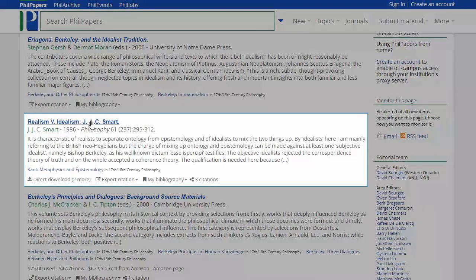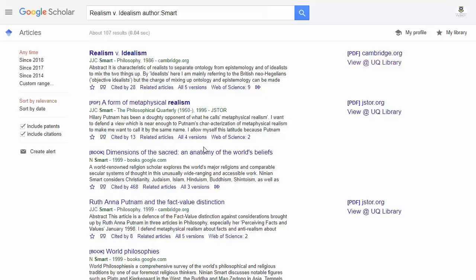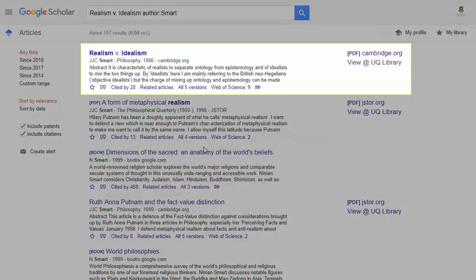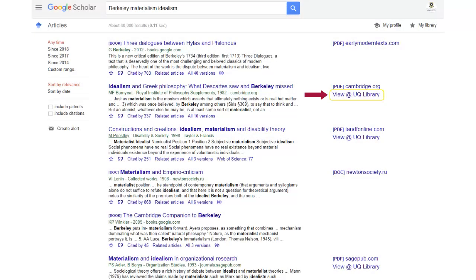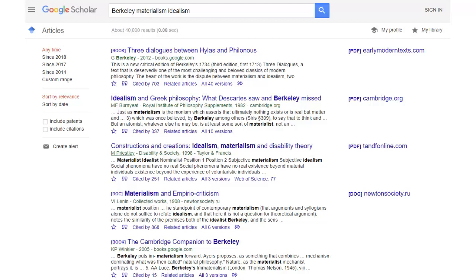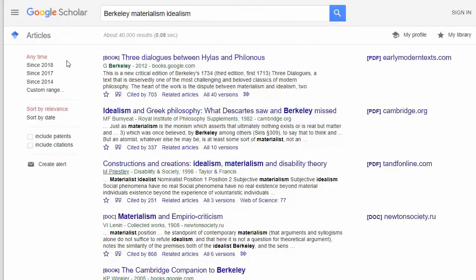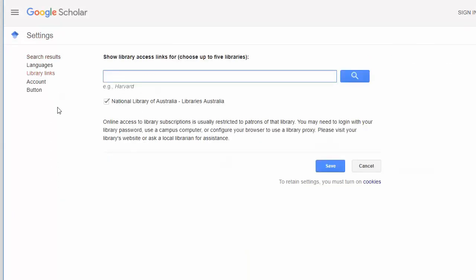Phil Papers doesn't link to the Library's subscribed resources. When you find an article you like, click on Find It On Scholar to go to the citation on Google Scholar. Make sure you have Google Scholar set to recognize you as a University of Queensland student. If you don't do this, Google will ask you to pay for articles that you can access for free via the Library. To change your settings in Scholar, go to scholar.google.com, click on the Settings button, select Library Links, and search for the University of Queensland Library.